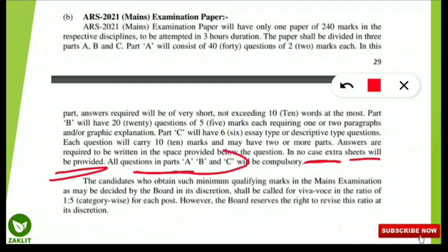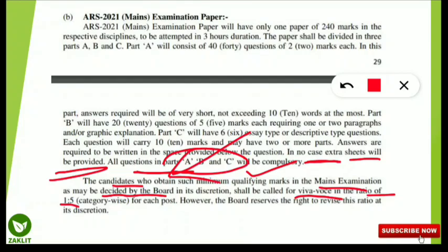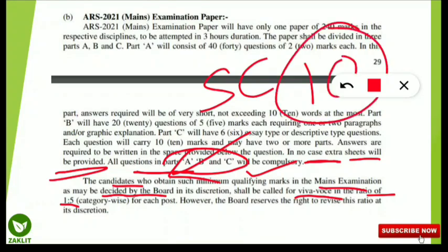All questions will be compulsory in all three sections — Part A, Part B, and Part C. Regarding the minimum qualifying marks for the mains exam: candidates who obtain the minimum qualifying marks as decided by the board will be called for the viva voce interview. The qualifying marks for the viva will be decided by the board, and candidates will be called in a ratio of 1:5 category-wise. For example, if there are 10 seats in SC category, 50 students will be called for the interview.